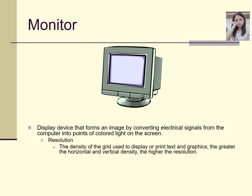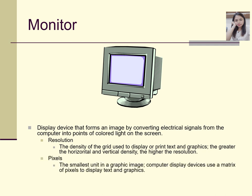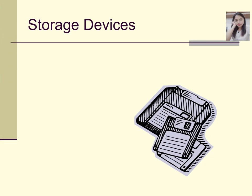The density of the grid used to display or print text and graphics is called resolution. The greater the horizontal and vertical density, the higher the resolution. Pixels are the smallest unit in a graphic image — a computer display device uses a matrix of pixels to display text and graphics, and from the pixels you can see how clear your picture or image is.